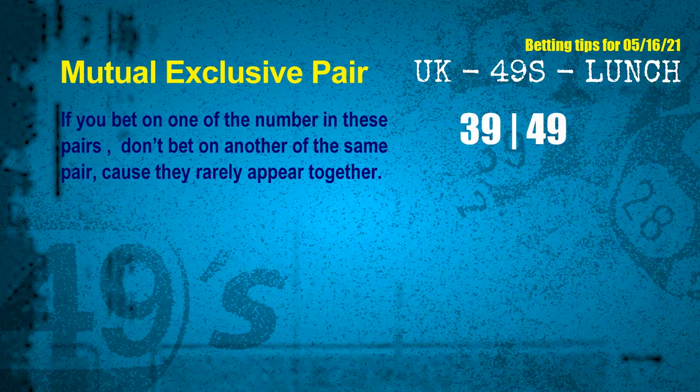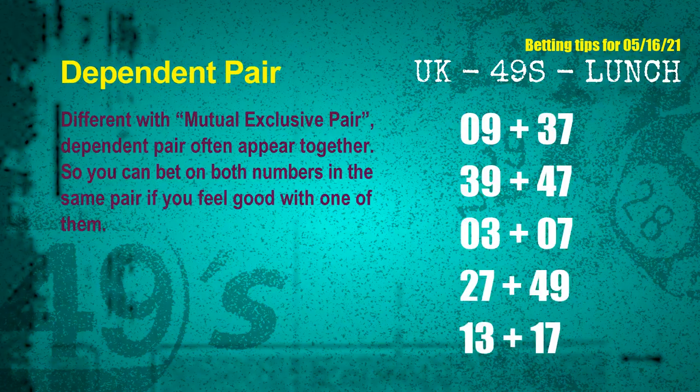The mutual exclusive pair for next draw is 39 and 49. Some numbers are mutual exclusive, some are dependent. Numbers in the same dependent pair you can bet on both, because they are often drawn in one draw. The dependent pairs for next draw are: first pair 09 and 37; second pair 39 and 47; third pair 03 and 07; fourth pair 27 and 49; fifth pair 13 and 17.